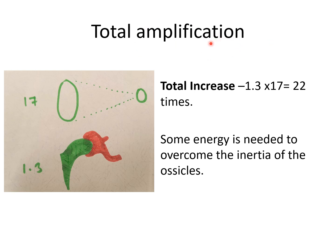The total amplification of sound waves by the middle ear is 17 × 1.3. The 1.3 accounts for the lever action — the handle of the malleus being 1.3 times longer than the long process of the incus — while the hydraulic action plays the major role, with the 17-times area difference amplifying sound by about 17 times. Multiplying these gives a total amplification of about 22 times, though exactly 22 times may not be achieved as some energy is needed to overcome the inertia of the ossicles.